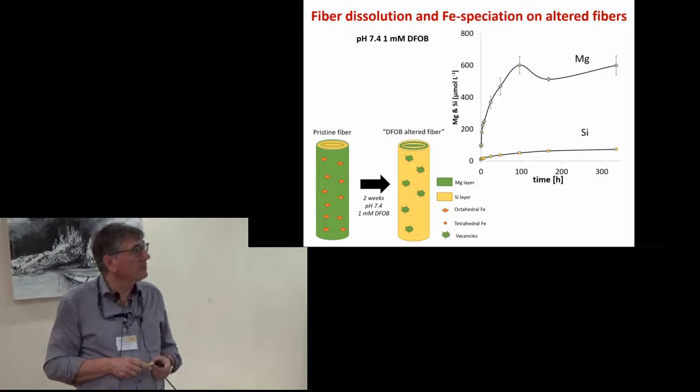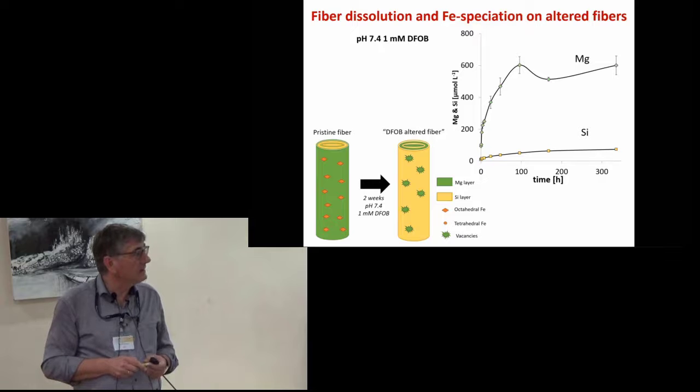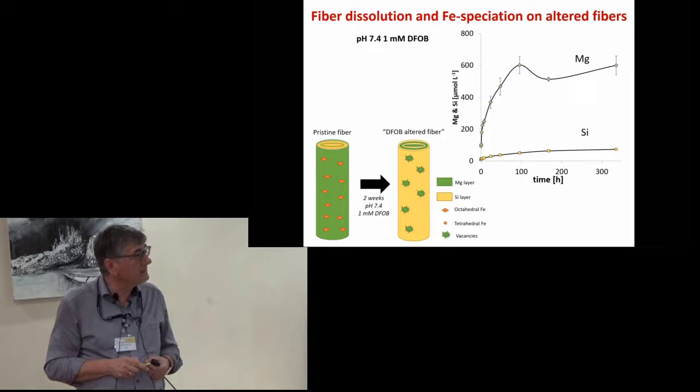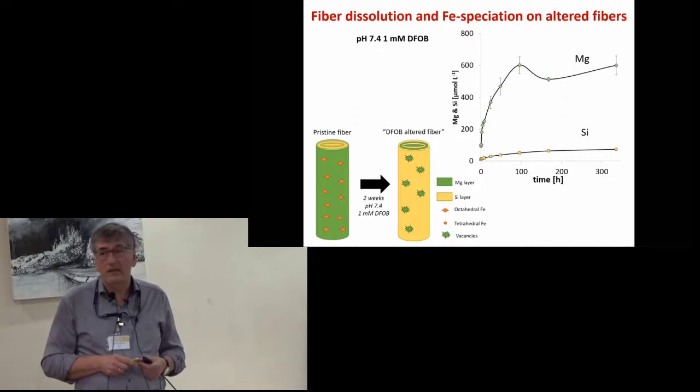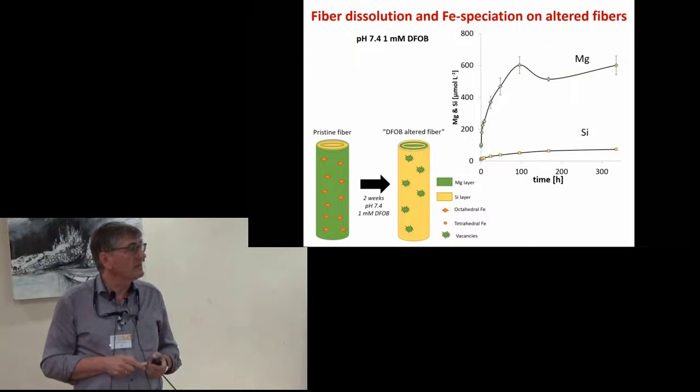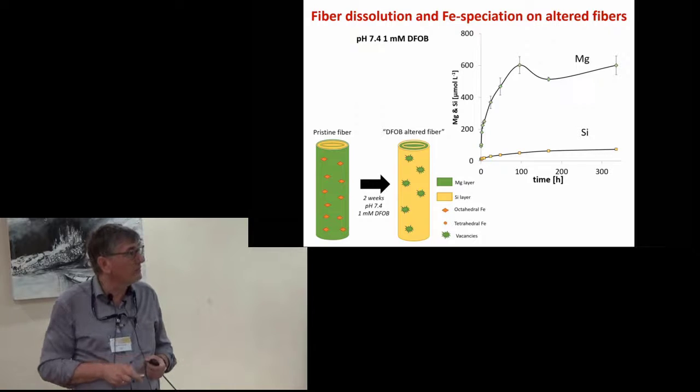Now in the presence of iron chelator DFOB, the outermost magnesium layer dissolves in a similar way, but the octahedral ion atoms are now complexed by the DFOB ligand so they do not precipitate on the fiber. And this DFOB also mobilizes the tetrahedral ion atoms in the exposed silicon layer, thus forming vacancies in the silicon layer, which leads to an enhancement of the solubility of silicon. This fiber is now called the DFOB altered fiber.